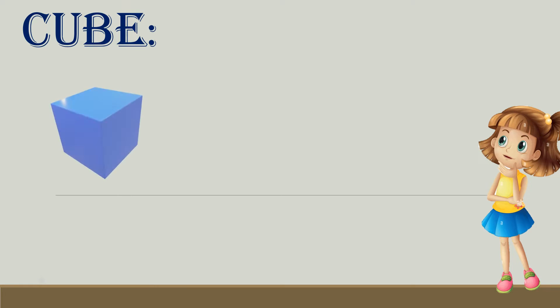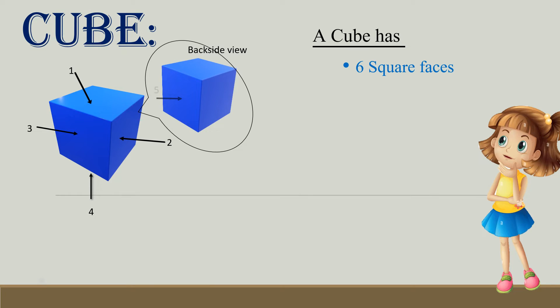Cube. A cube has six square faces: 1, 2, 3, 4, 5, 6. 12 edges: 1, 2, 3, 4, 5, 6, 7, 8, 9 on front side, and back side of the cube 10, 11, 12. And 8 vertices: 1, 2, 3, 4, 5, 6, 7 on front side, and back side there is 8th vertice.